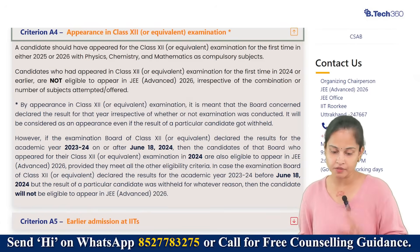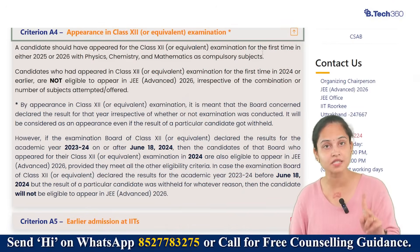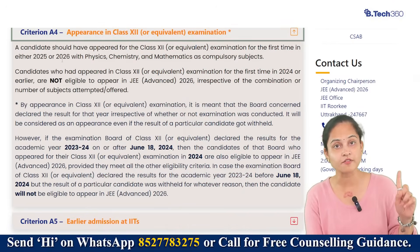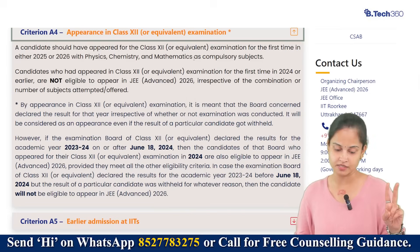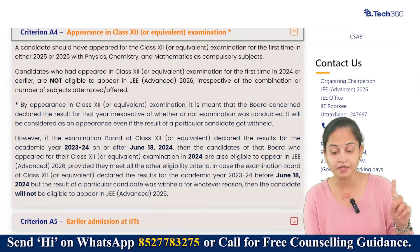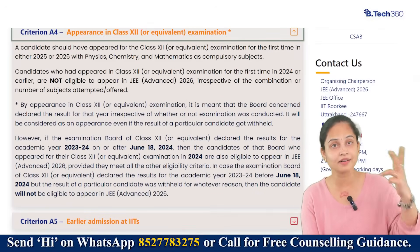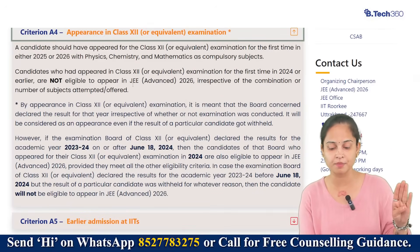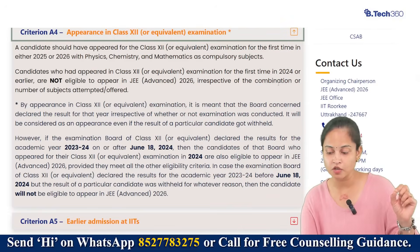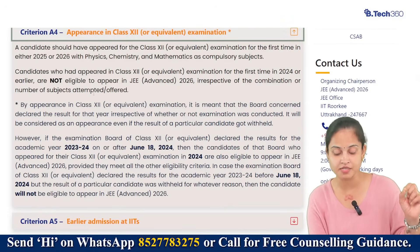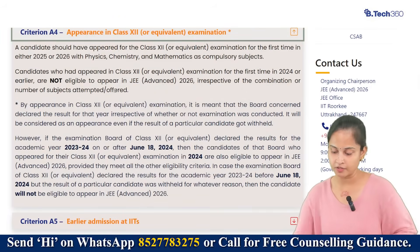Criteria number four is appearance in Class 12th or equivalent examination. A candidate should have appeared for the Class 12th examination for the first time either in 2025 or 2026, with Physics, Chemistry, and Mathematics as compulsory subjects. Candidates who appeared in Class 12th for the first time in 2024 or earlier are not eligible to appear in JEE Advanced 2026, irrespective of the combination or number of subjects attempted.